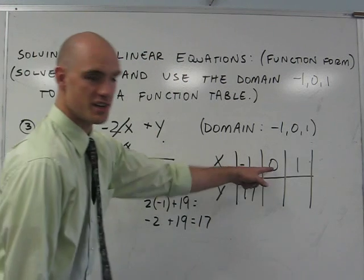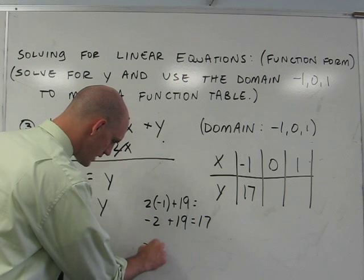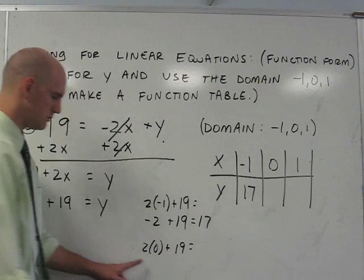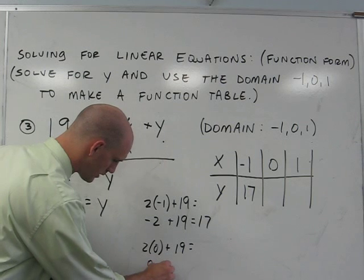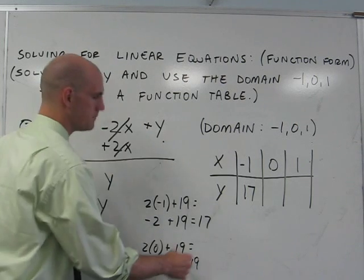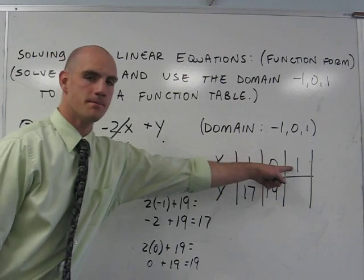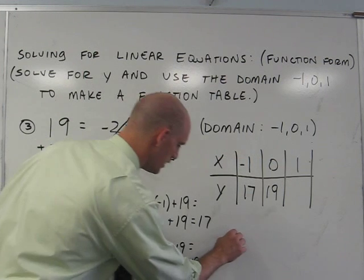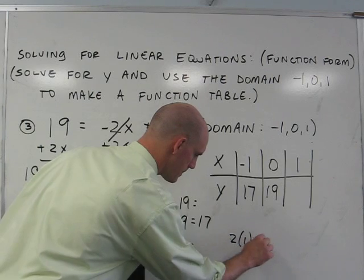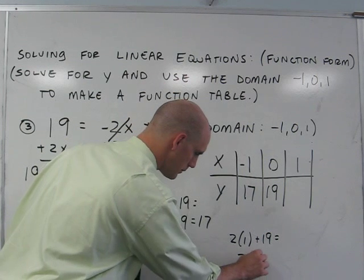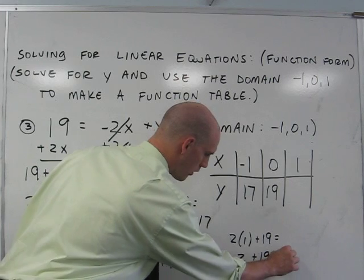For my input 0, 2 times 0 plus 19 is equal to 0 plus 19 or 19. For my input 1, I simply put in 1. 2 times 1 plus 19 is equal to 2 plus 19 or 21.